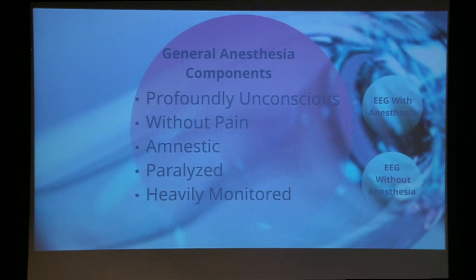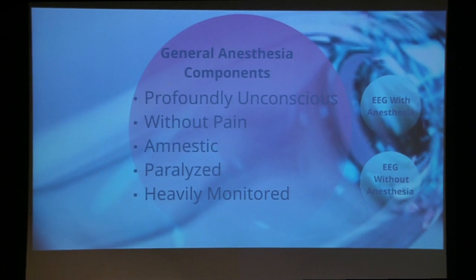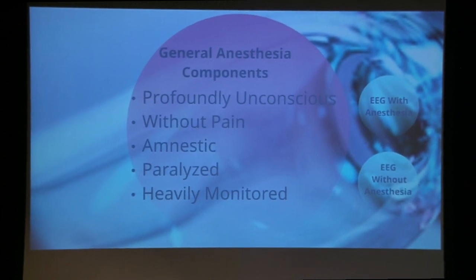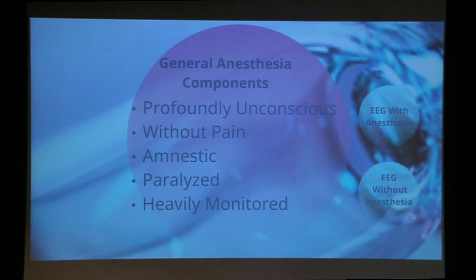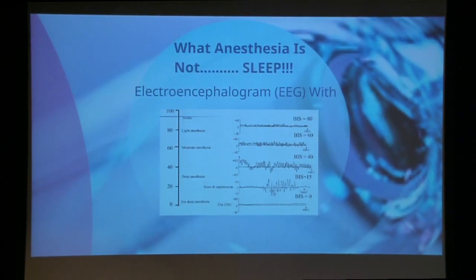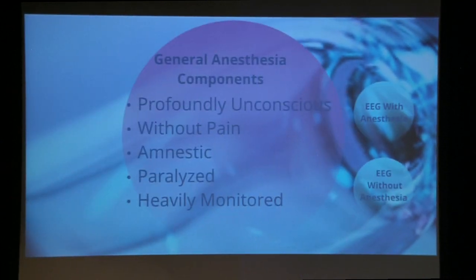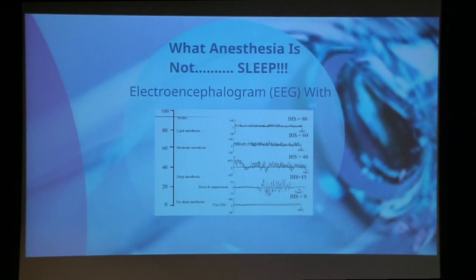General anesthesia has four main components: profound unconsciousness, you are without pain, you are amnestic — meaning unable to form memories — and you're completely paralyzed. Because of that you're pretty heavily monitored. What it is not is sleep; basically you're as close as you can get to death without crossing over the threshold.